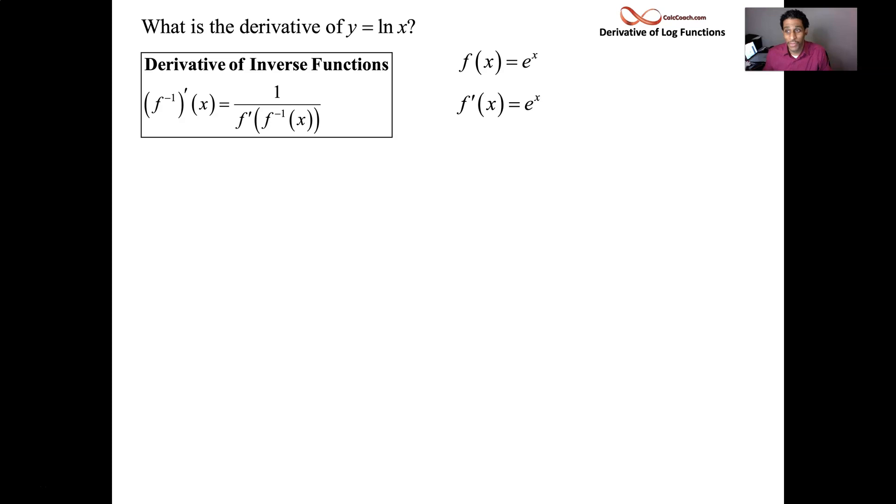So we know e's derivative is just e to the x. If your inverse function is log x, our job is to figure out what its derivative is. According to this formula, we take 1 over e to the x's derivative evaluated at natural log of x.